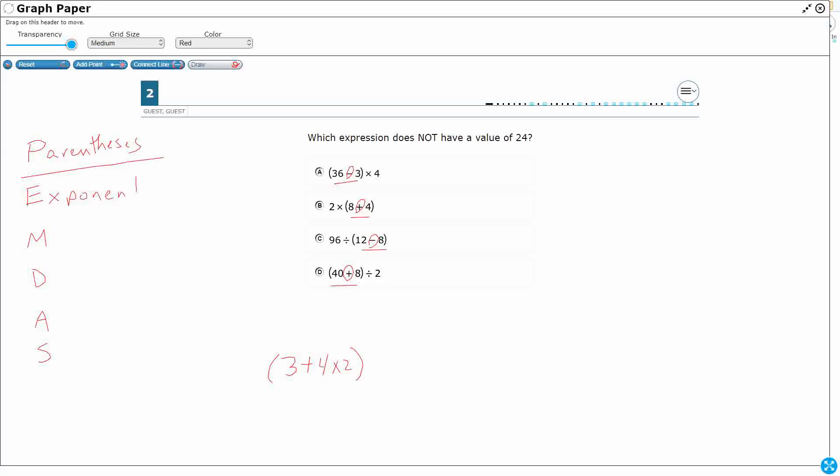Next, we would do exponents, but we really don't get into that much in fifth grade. That's more of a sixth grade thing. And then this is where it gets a little bit interesting. So multiply and divide are inverse operations. That means they are equal. They're the opposite of each other.